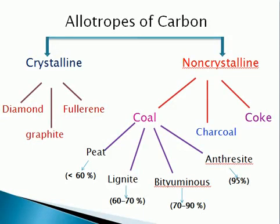Friends, in this chapter we are studying the element carbon. We studied what is meant by allotropy and the types of allotropes — crystalline and non-crystalline allotropes of carbon. We also studied the crystalline forms: diamond, graphite, and fullerene. Now we are going to study the non-crystalline carbon allotropes.